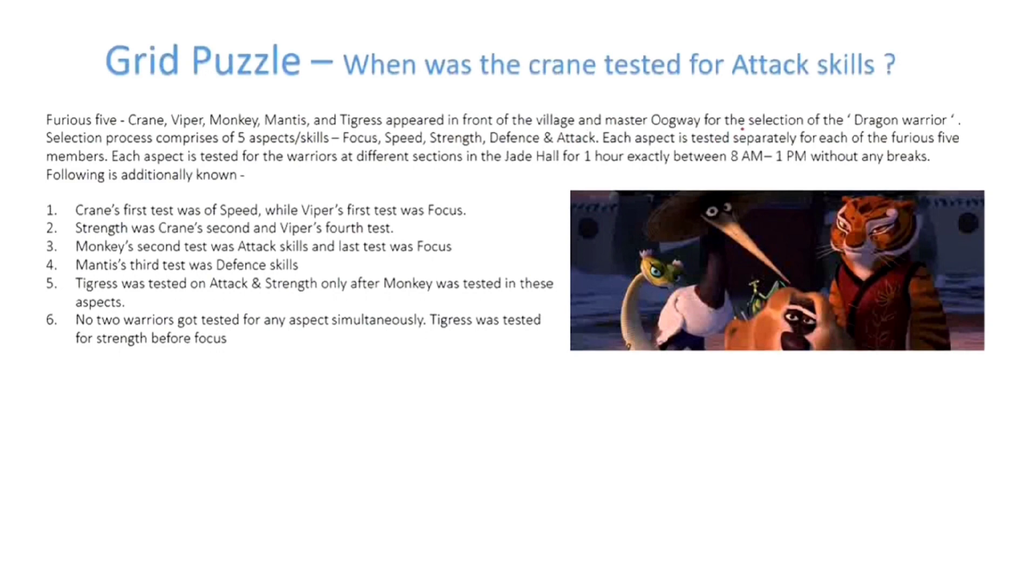The selection process comprises five aspects: Focus, Speed, Strength, Defense, and Attack. Each aspect is tested separately for each of the Furious 5 members at different sections in the Jade Hall for one hour exactly, between 8 AM to 1 PM without any breaks. The following is additionally known.